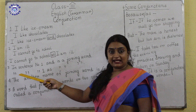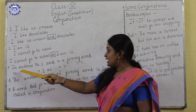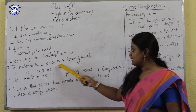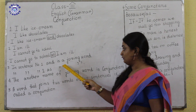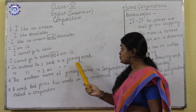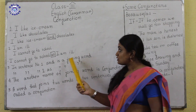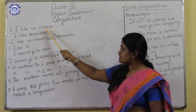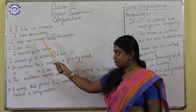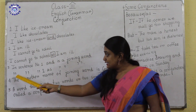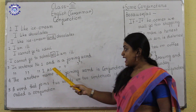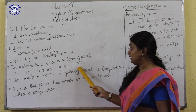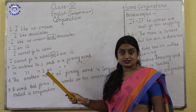Coming back to the examples. In sentence number one, 'and' is joining two words — ice cream and chocolates. And in sentence number two, 'as' is joining two sentences.